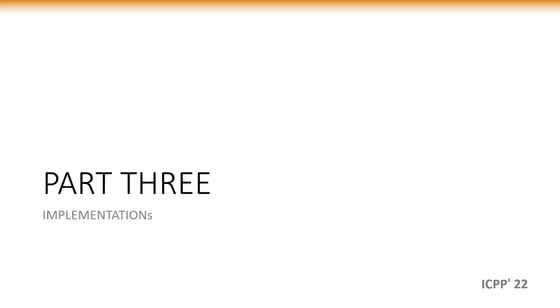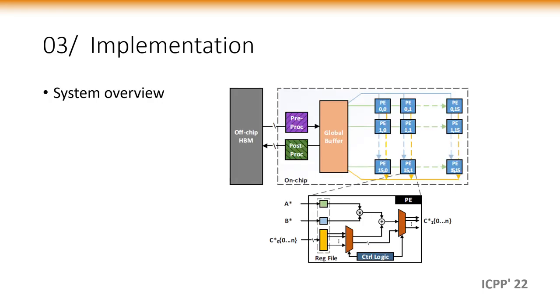In part 3, we discuss implementation of MESA. The figure presents an overview of the MESA system architecture. We devise a 16 by 16 scale systolic array that interacts with on-chip global buffer, which in turn interacts with off-chip HBM. Different from the baseline systolic arrays, we add two modules for pre-processing and post-processing between HBM and global buffer.